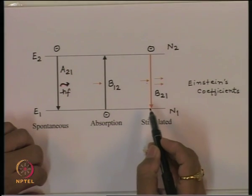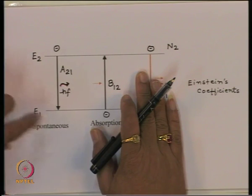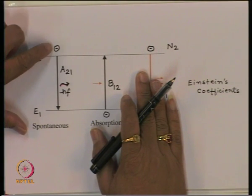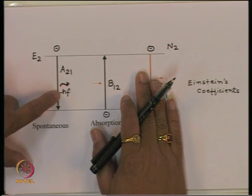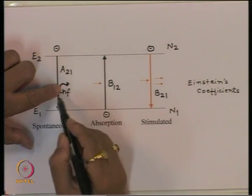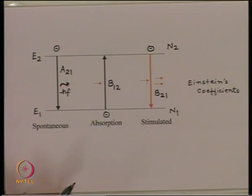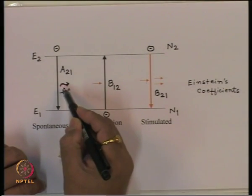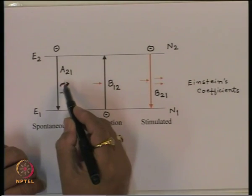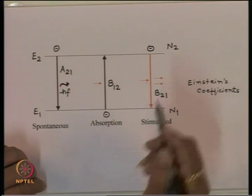But if you create a population inversion — that means more electrons in the upper level — then naturally a transition will take place and a photon will be emitted. When this photon is emitted, it is now available and can trigger a process which will be stimulated emission. So even if one transition takes place, the photon is emitted and is capable of starting the stimulated process.